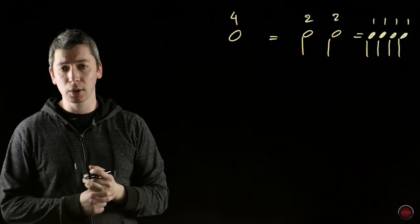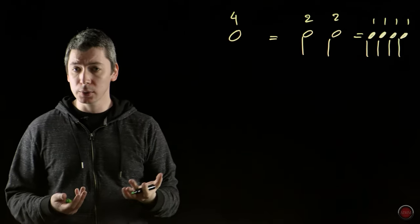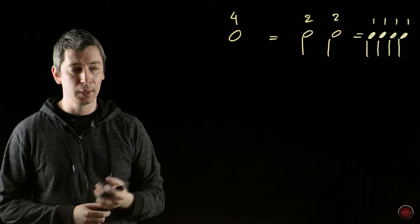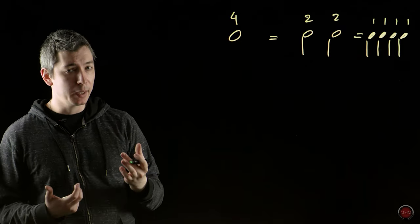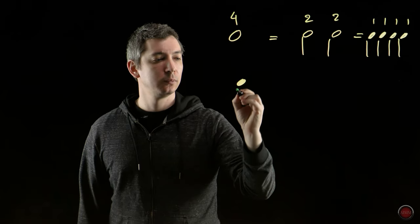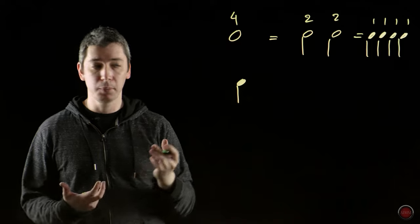Now, if we start to talk about notes that are shorter than a beat, because here all notes were notes that equal to a beat or longer than a beat. Now we have notes that are shorter. For example, if I start with my quarter note, we know that such a note equals to only one beat.